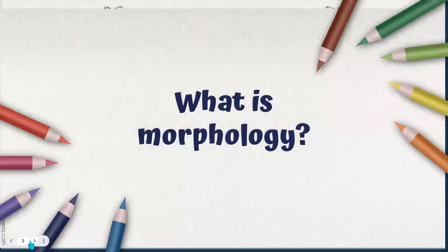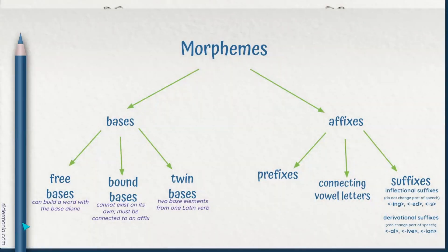So what is morphology? It's simply the study of words and their parts. Morphemes are the smallest piece of a word that still maintains meaning. Morphemes can be categorized into two sections: bases and affixes.